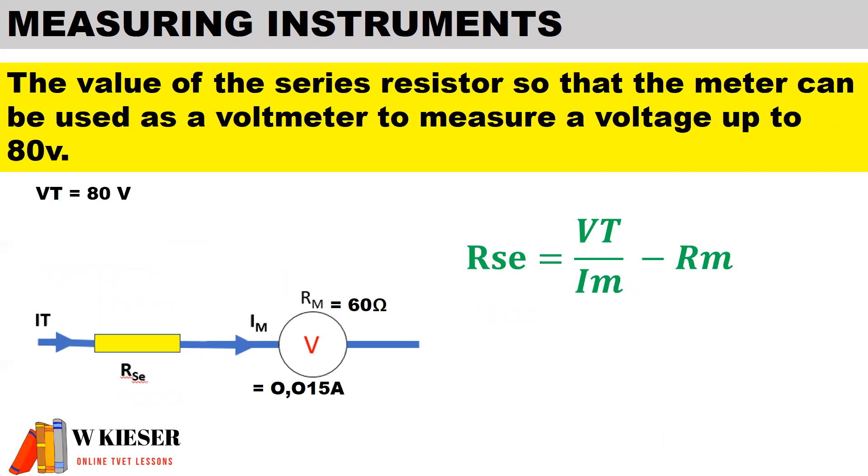Now to determine the value of the series resistor so that the meter can be used as a voltmeter to measure a voltage ranging from 0 volts to 80 volts. This is a series circuit, which implies that current remains the same; however, voltage is divided.